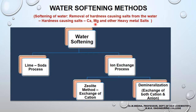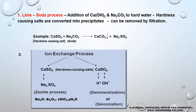Coming to the methods of softening, either we can go for the lime-soda process or we can do it by means of ion exchange process. In the ion exchange process, we can exchange only the cationic part of the hardness-causing salt — that is called the zeolite method — or we can exchange both the anion and cationic part of the hardness-causing salt, which is called demineralization.